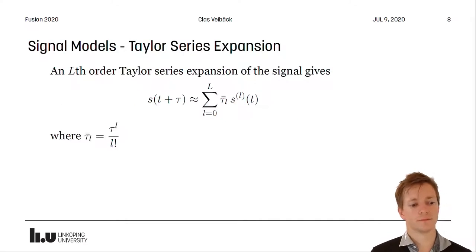So what we do is we perform a Taylor series expansion at the time of the snapshot around the delays for each sensor. This gives us a truncated sum like this, where we have the derivatives of the sound source signal in S and some coefficients dependent on the time delay.